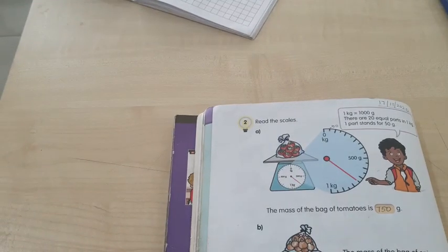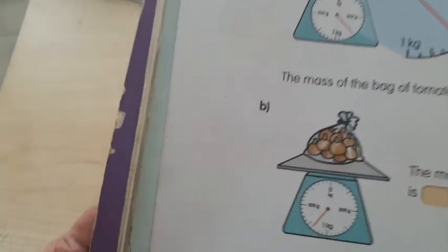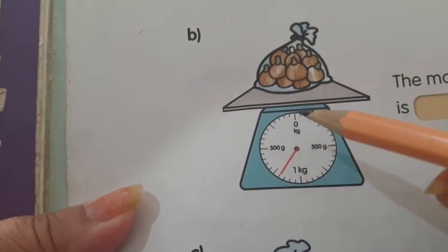Now let's look at B. Again, B is also the same. You can look at it closely. From 0 to 1, there are 20 lines.